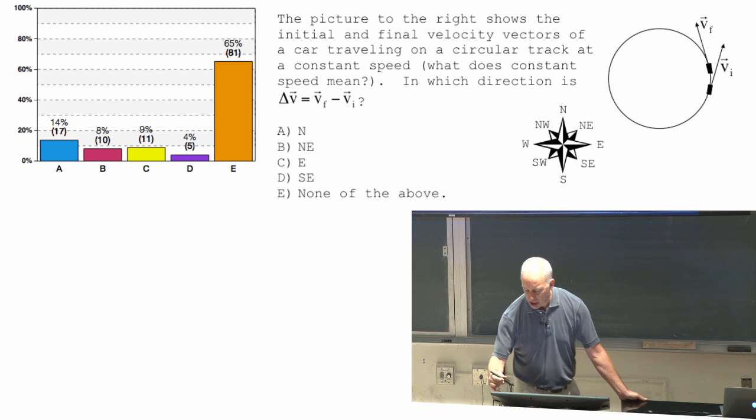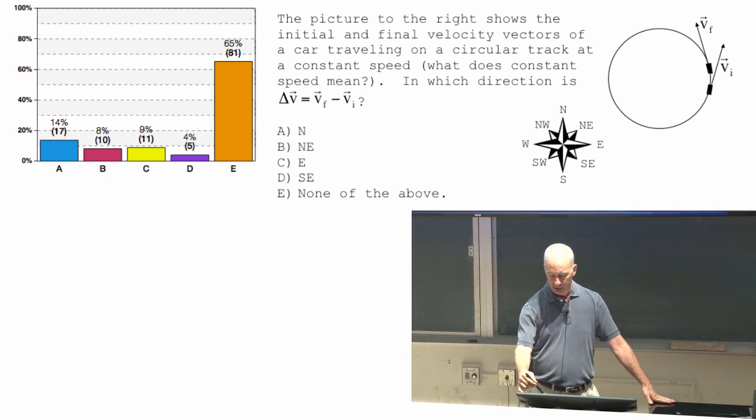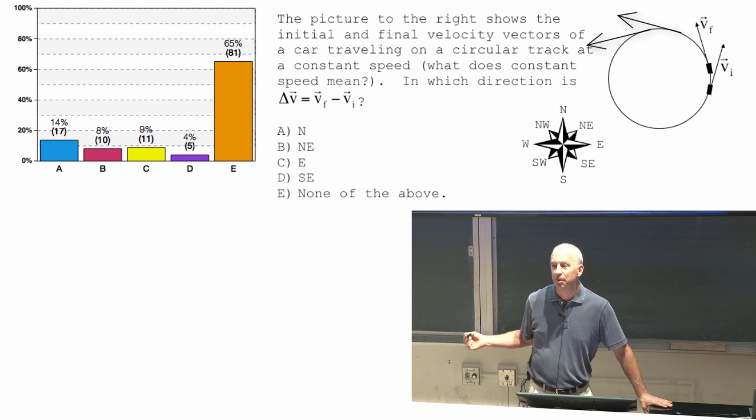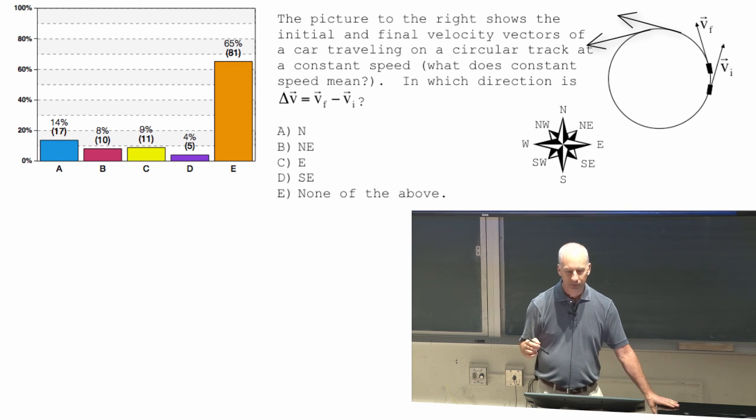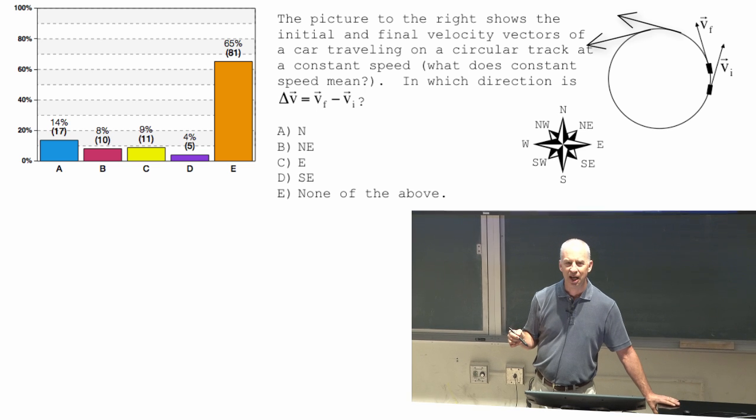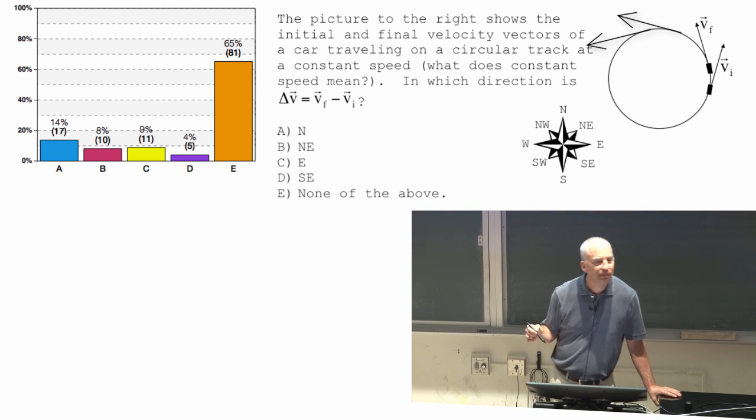What do you suppose the change in momentum up at the top is? Suppose I picked a couple of these near the top. What's the change in momentum direction up at the, up on the northward side of this circle? Anyone have any guesses? To the south.